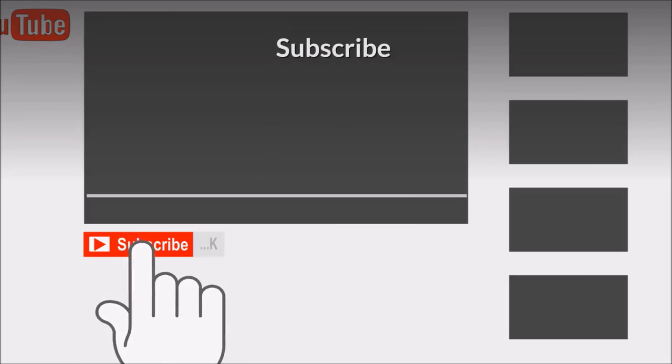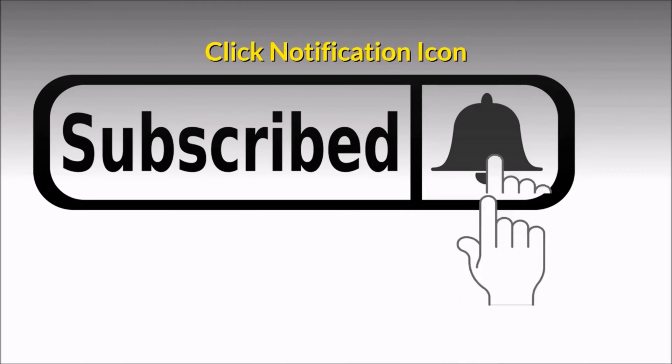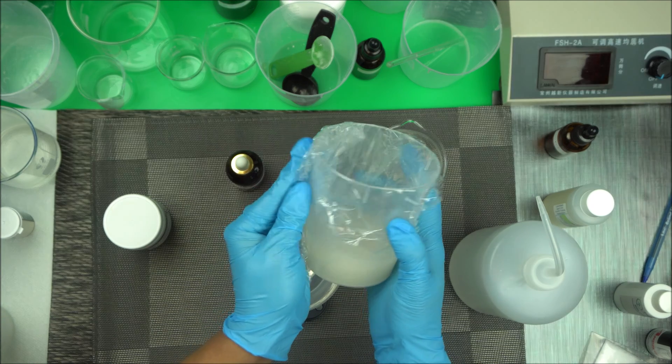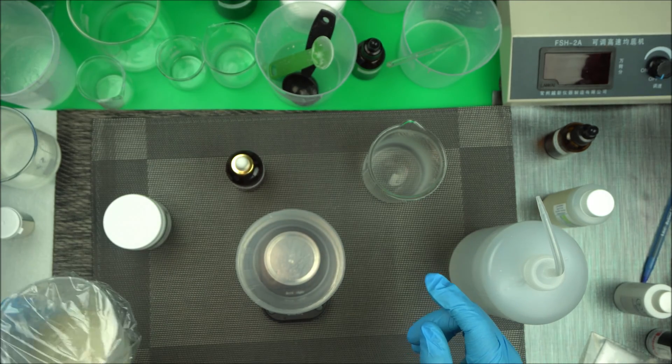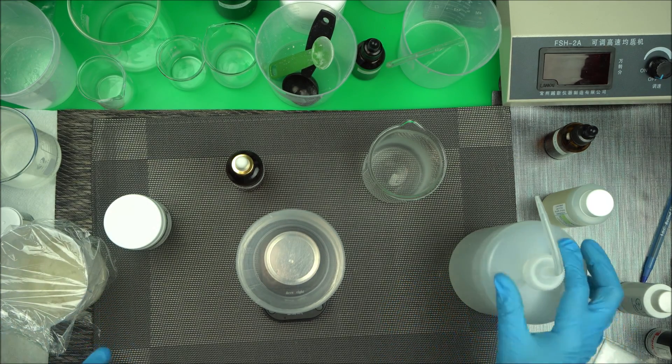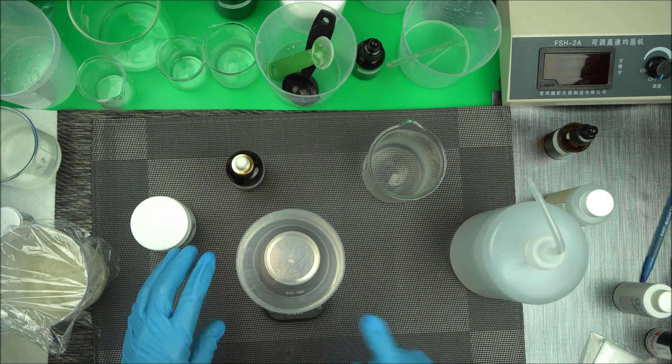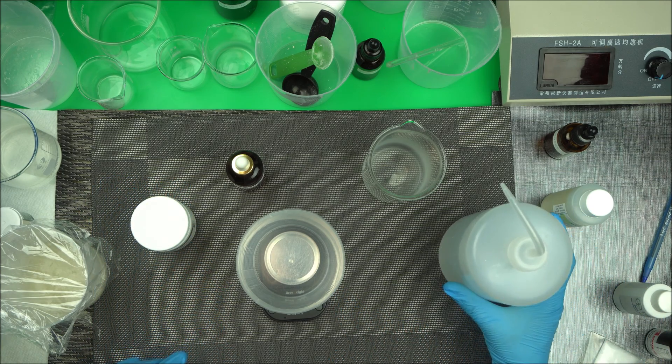Next, hydroxyethyl cellulose. If you want to learn how to make this, look in the description box below. So the first thing you want to do is measure your water phase.